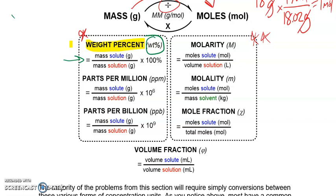Weight percent and volume fraction are very similar — weight percent is like a mass fraction, showing how much of the solute by mass makes up the entire solution, except we multiply by 100 to get a percentage. Parts per million and parts per billion share the exact same formula as weight percent — mass of solute over mass of solution — but instead of multiplying by 100, we multiply by one million for PPM and by one billion for PPB. These terms are more commonly used in solutions with a very small amount of something, like the EPA describing the amount of lead in water — very small but quantifiable — so we multiply by 10⁶ or 10⁹ to get a nice whole number.